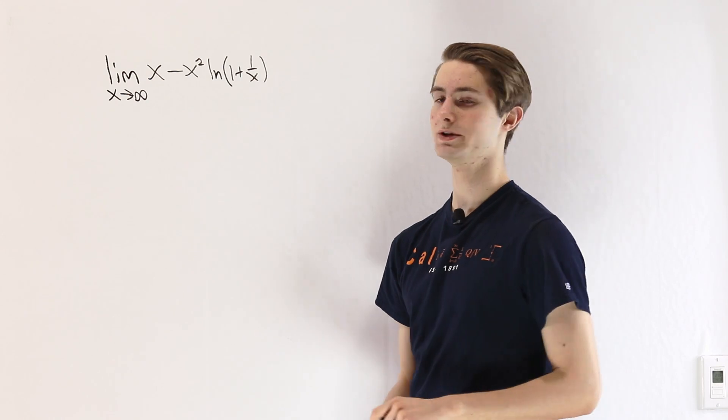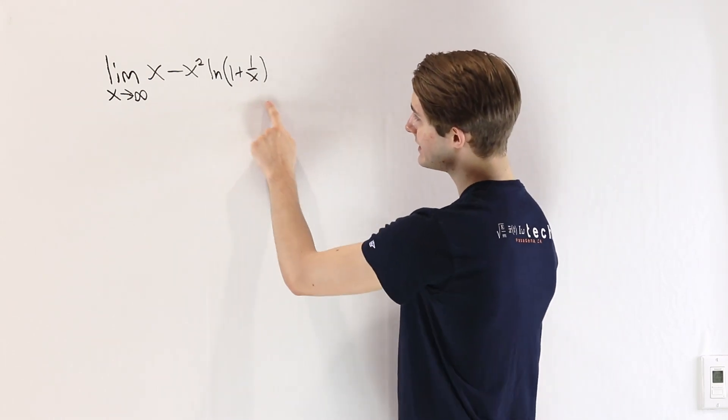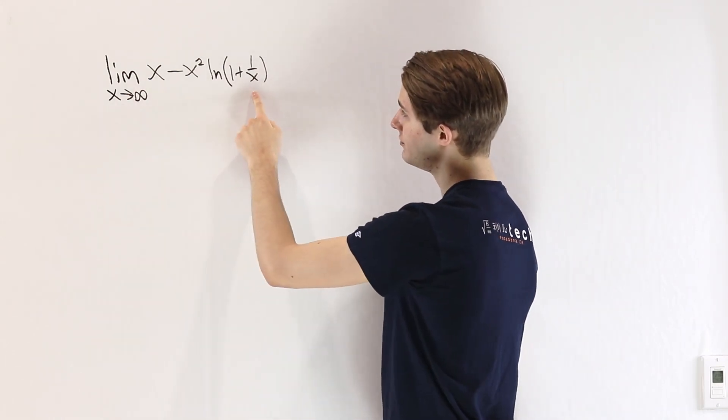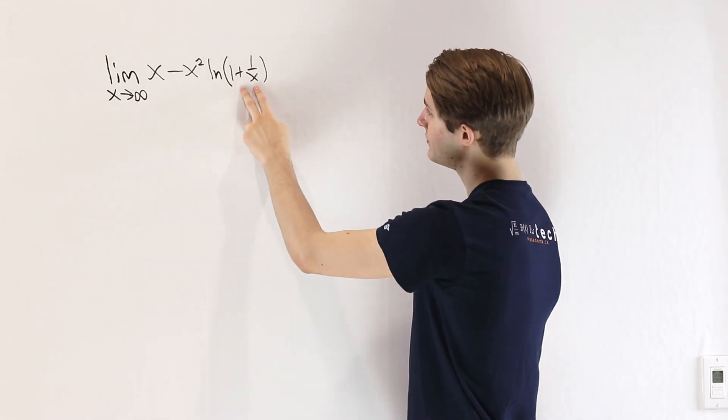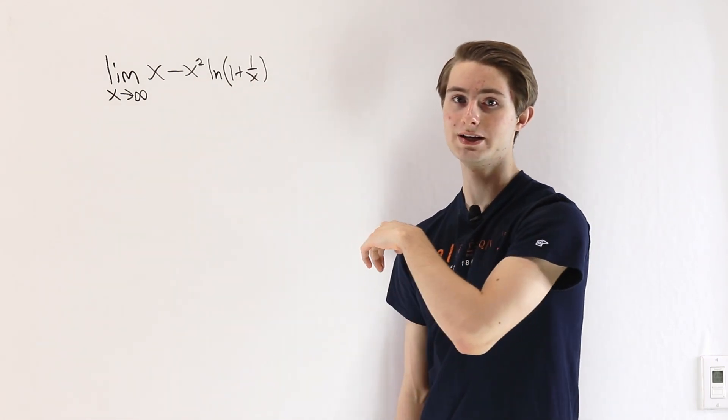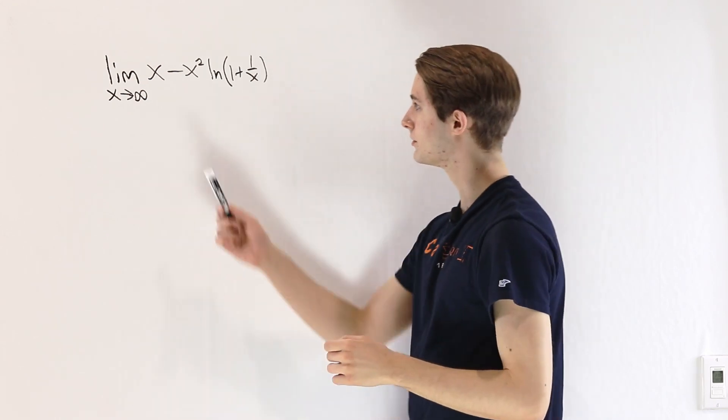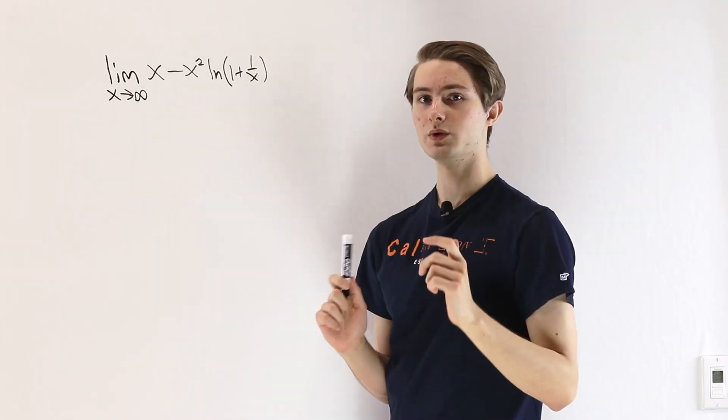Now this is an indeterminate form limit. On the inside of this natural log, as x approaches infinity, we're going to get the natural log of 1 which is 0. So we have 0 times infinity already, that means we're going to have to do some more work to figure out what this limit looks like.